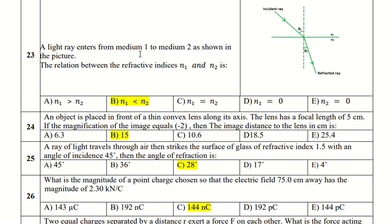A light ray enters from medium 1 to medium 2 as shown in the picture. Medium 1 is above and medium 2 is below. The angle theta 1 at the top is large, while the angle theta 2 is small.